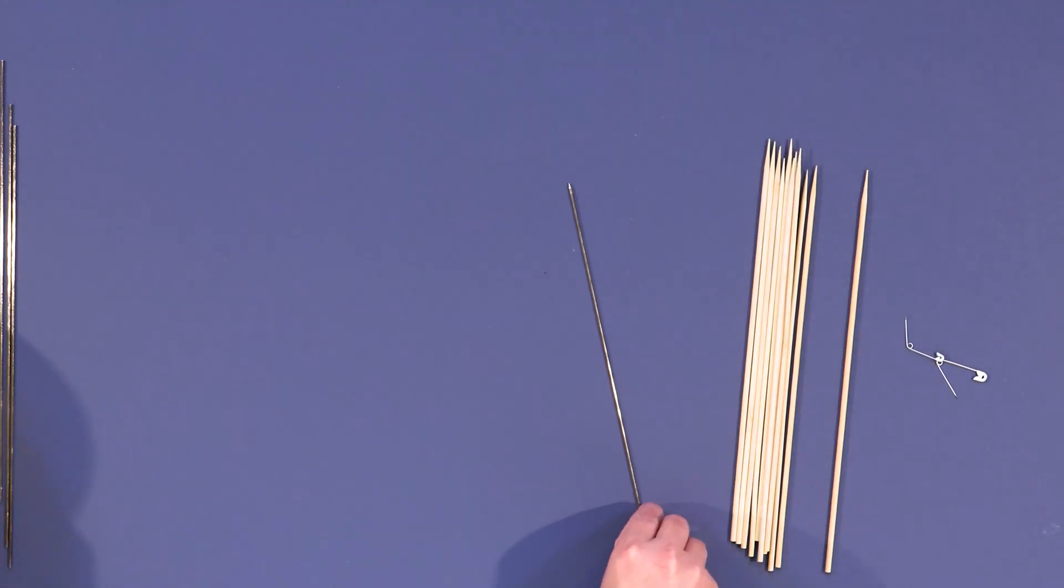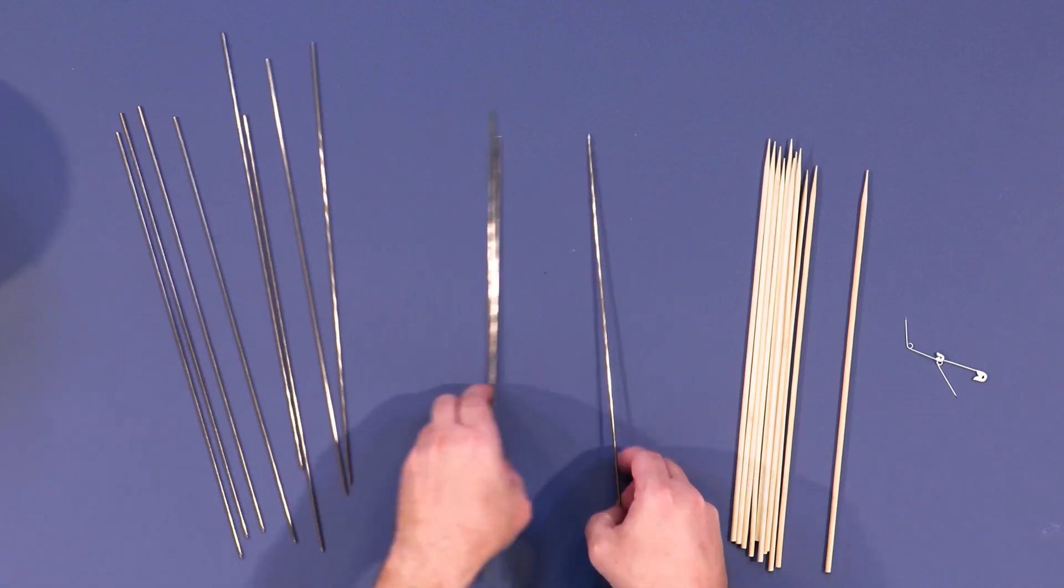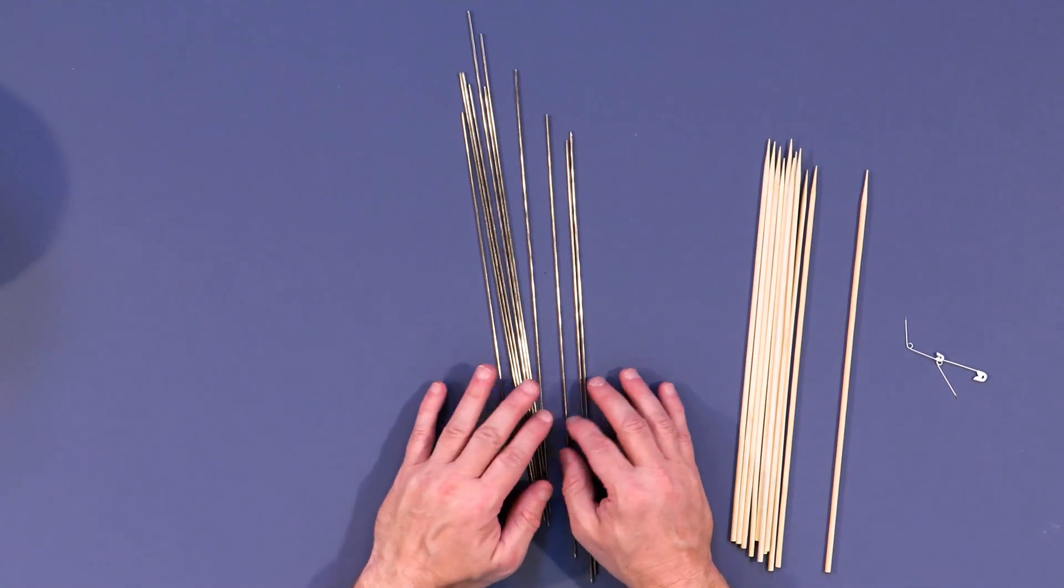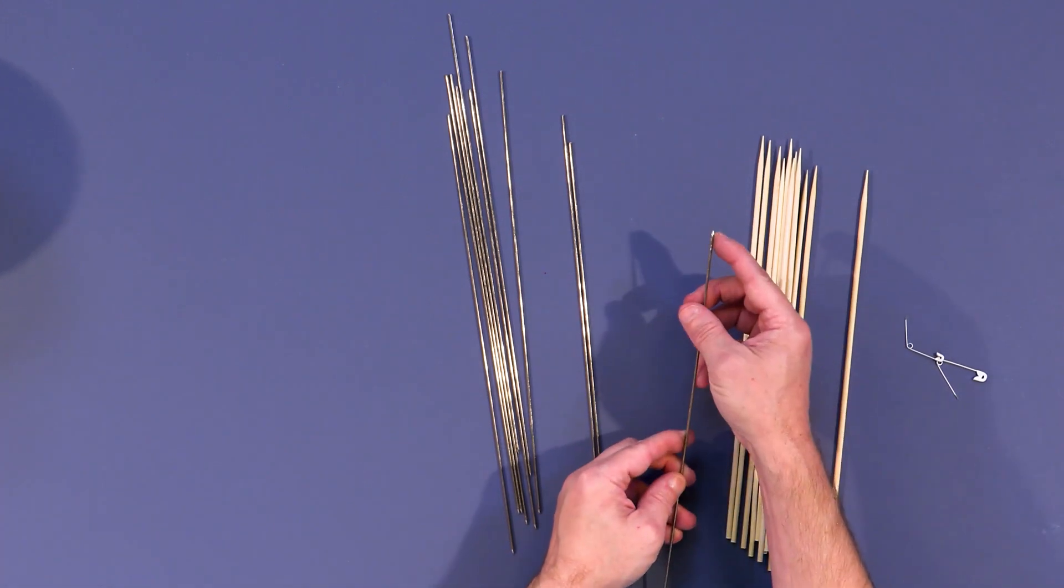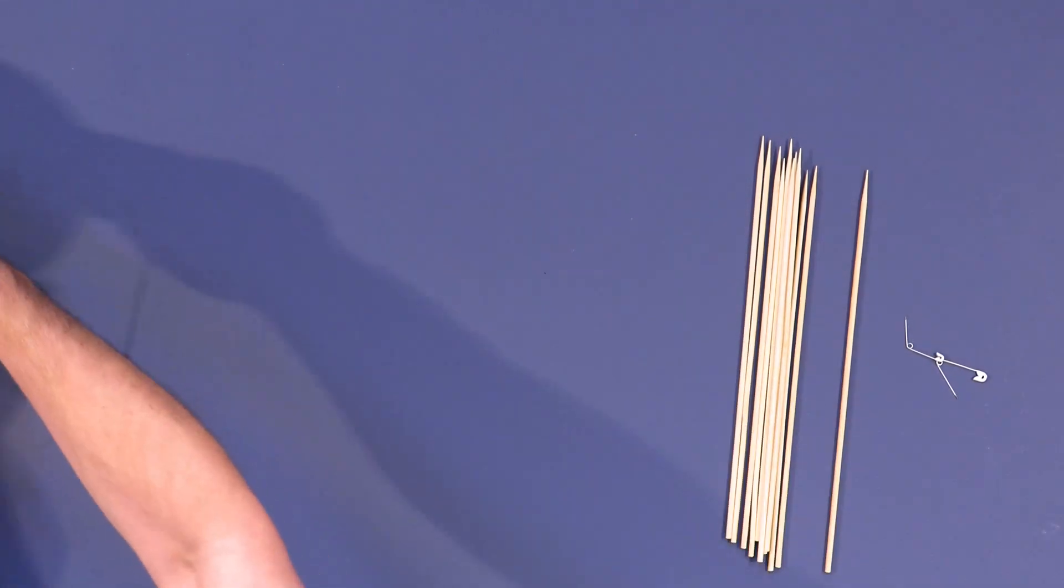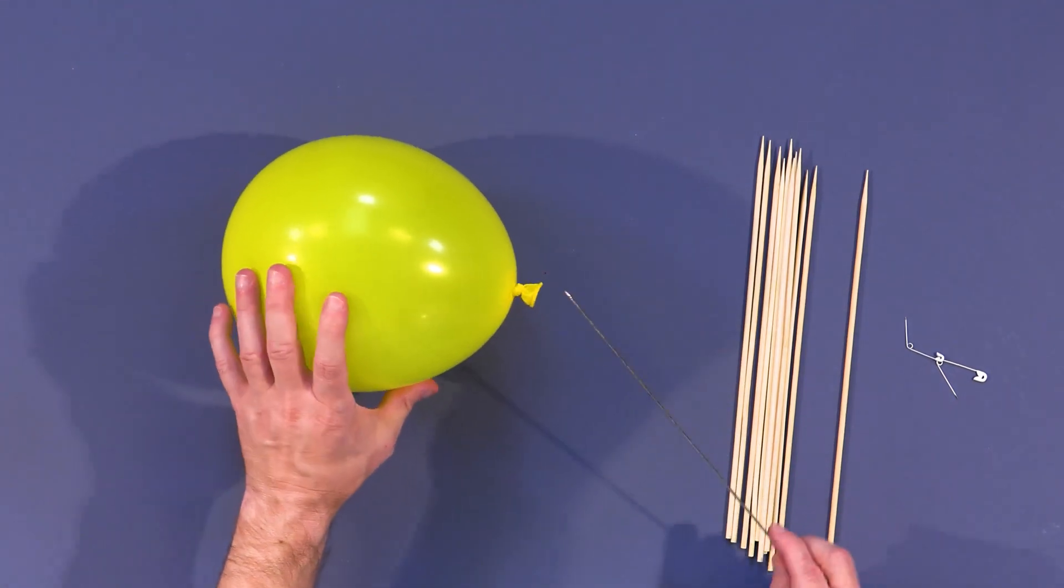So here I have these metal skewers. I thought it would be a good intermediate. Instead of going straight to the wood, we'll use the metal skewers here. And these are smaller diameter than the wood, but also significantly smoother there. Let's see what happens when we try to go into the end here.